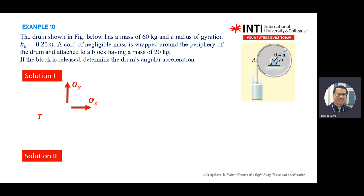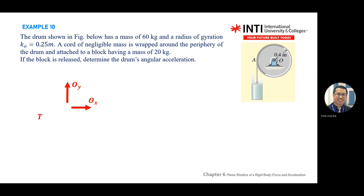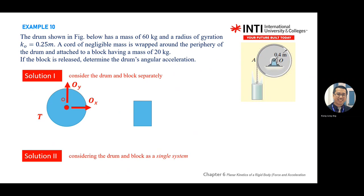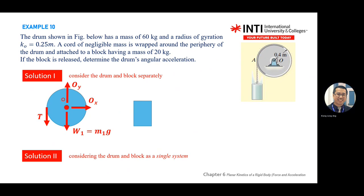One more example. You have an object pulling from point A — mass is given, radius of gyration is given, a chord with ignored mass is attached to a hanging block with a given mass. If the block is released, determine the drum angular acceleration. This block has mass, so when you drop it, the drum will rotate anticlockwise. Draw the free-body diagram — the drum is pinned, so two forces X and Y. There is tension in the cable. This is a balanced drum, meaning G is at the center.